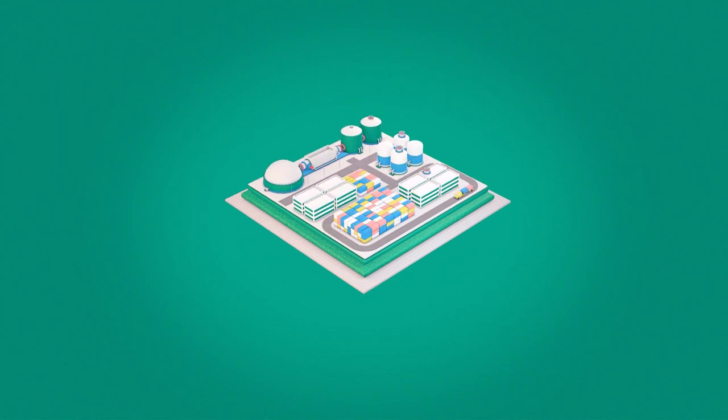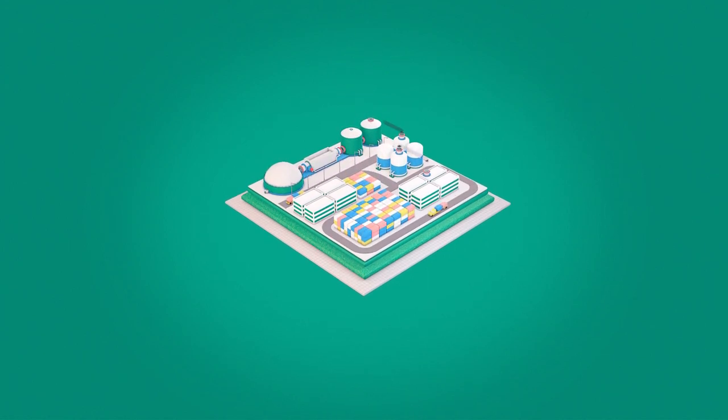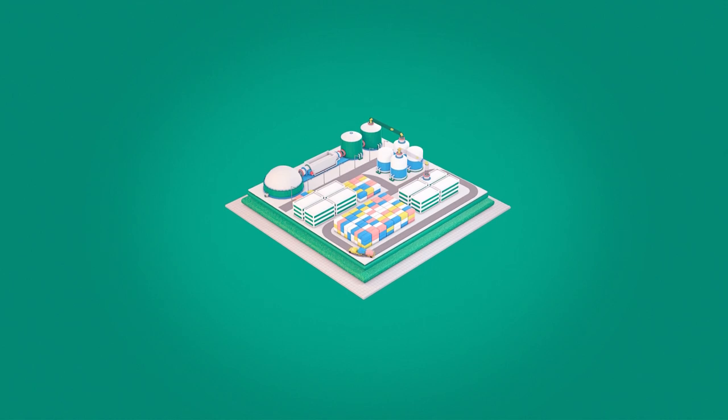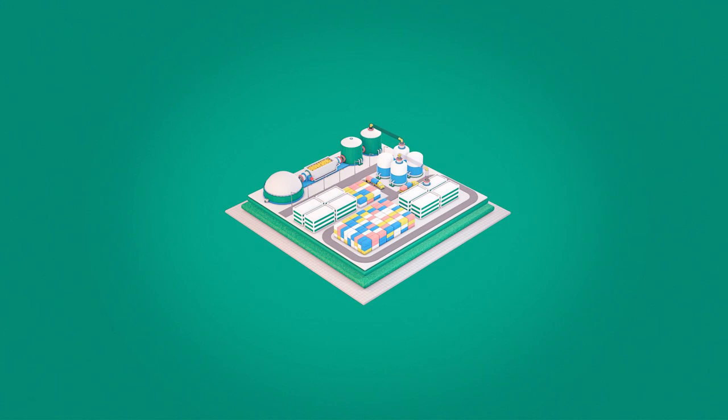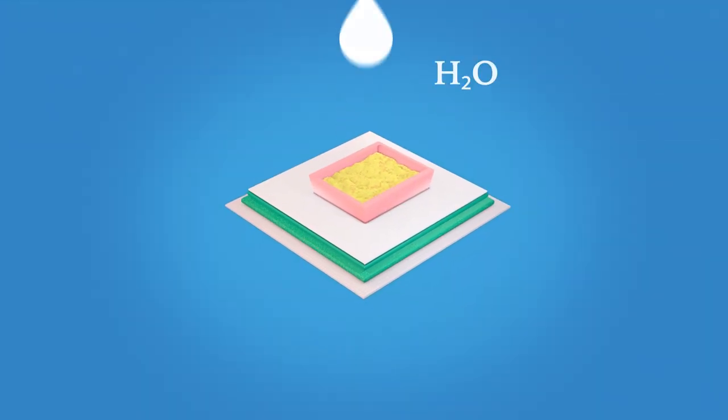The process begins when organic matter, substrate as it is scientifically known, is brought to the plant by truck and placed in a holding tank. Here water is added so that it forms a slurry.